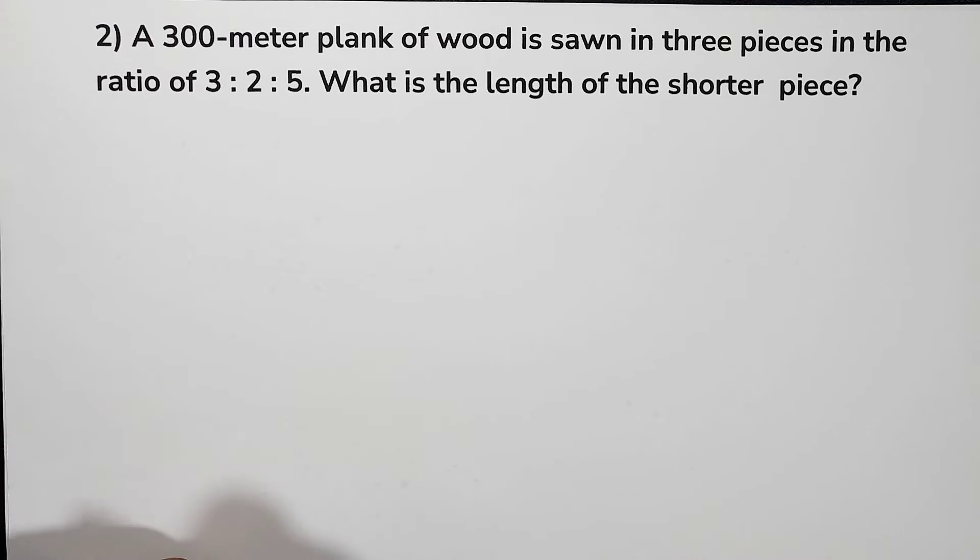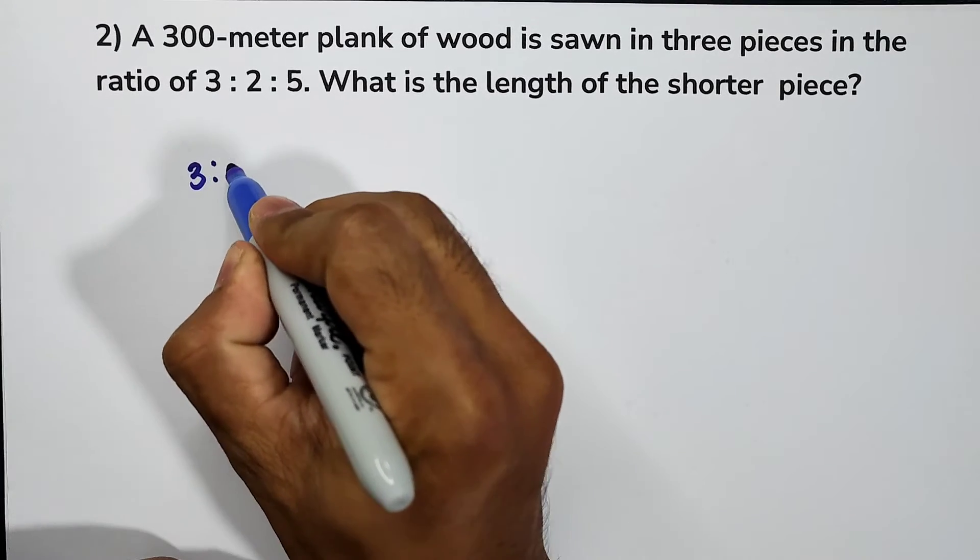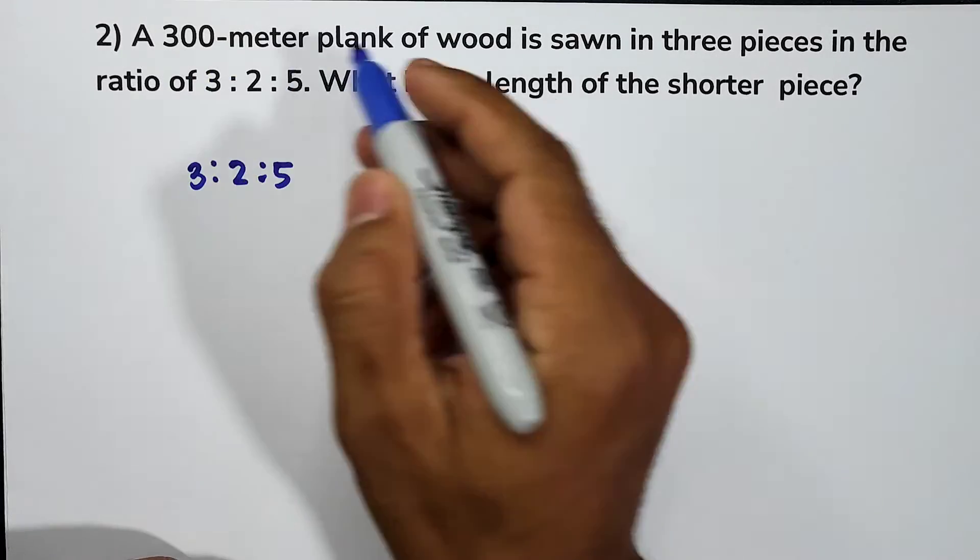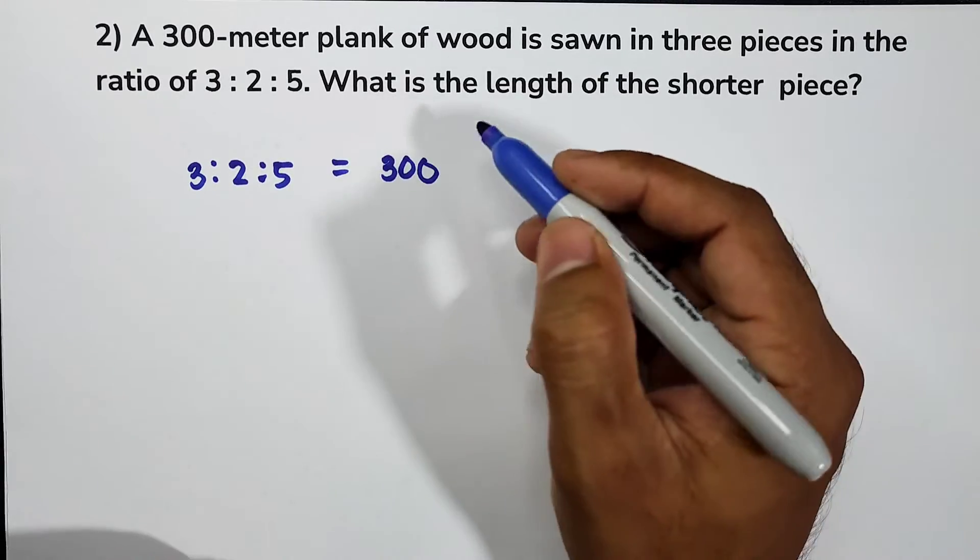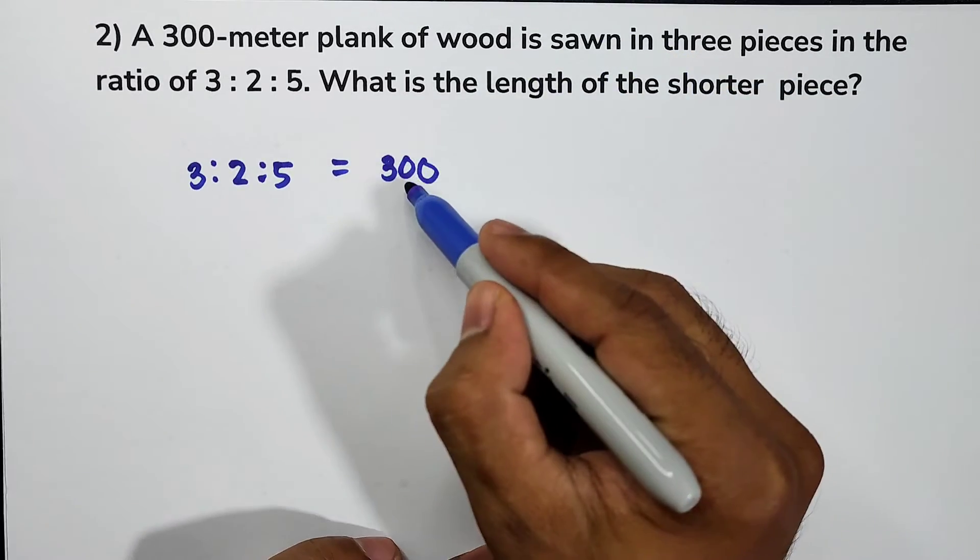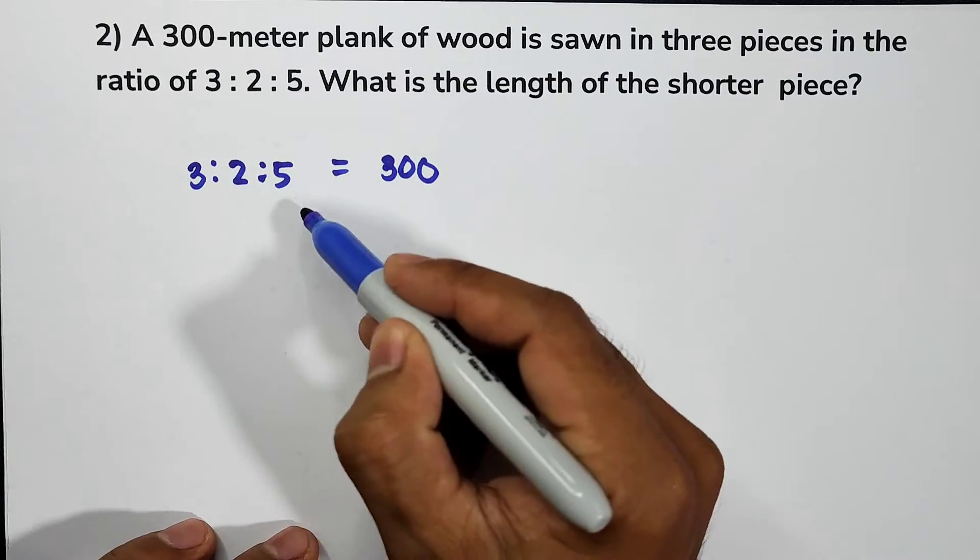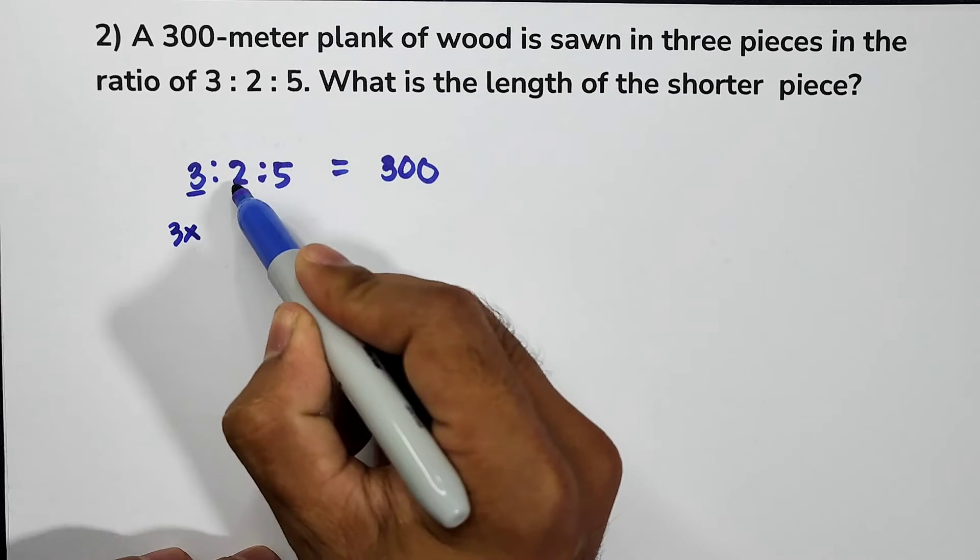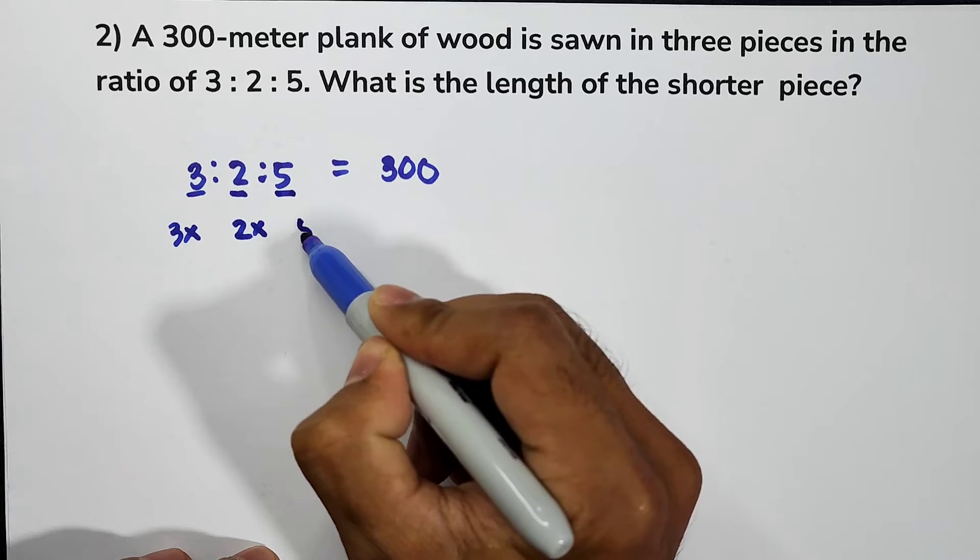Now, let us get the ratio or the given ratio, that is 3 to 2 to 5, and then that is equal to 300 meters. Take note, we are going to divide this plank of wood into the ratio of 3 to 2 to 5. Therefore, let 3 as 3x, 2 as 2x, and then 5 as 5x.